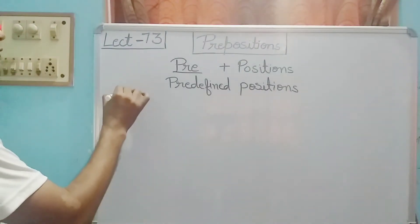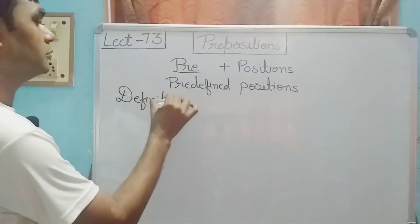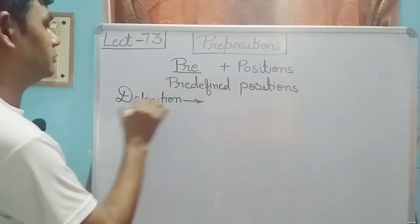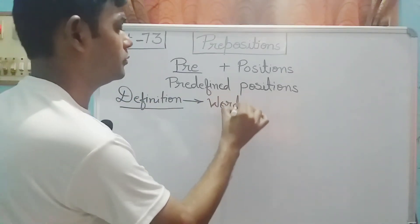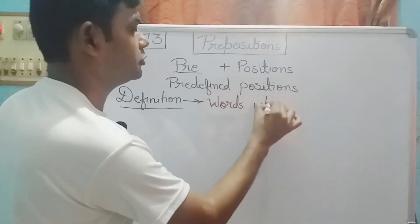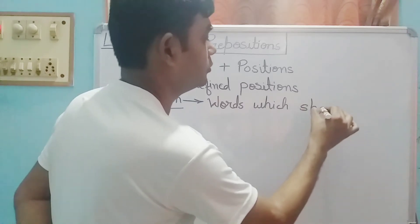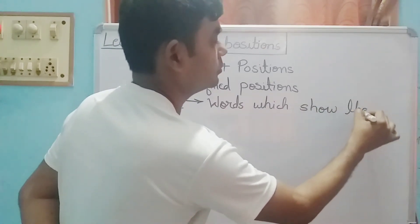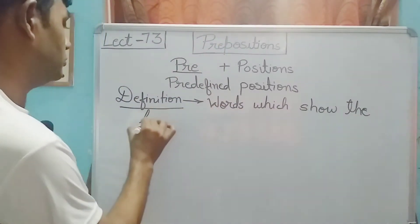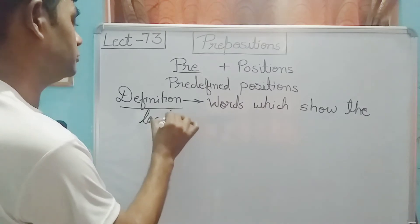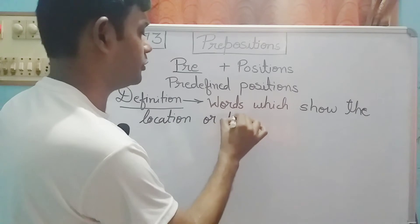So the definition comes: Words which show the location or direction of motion